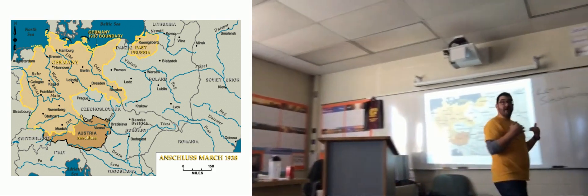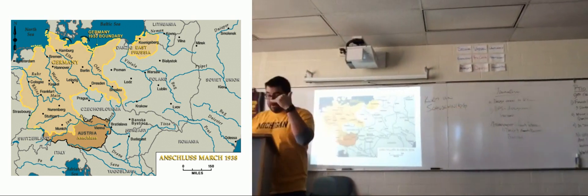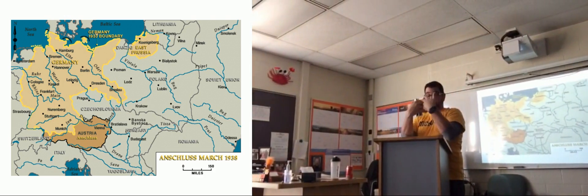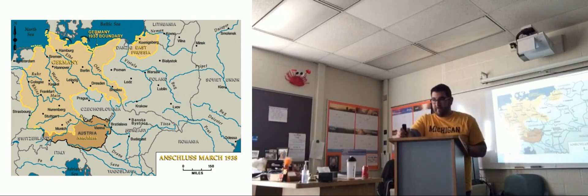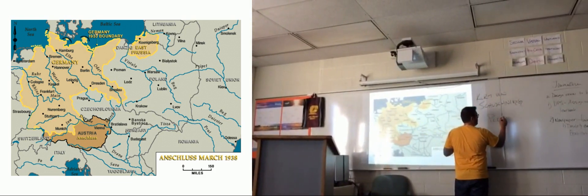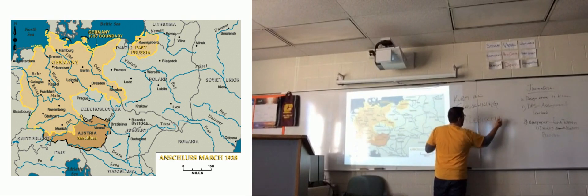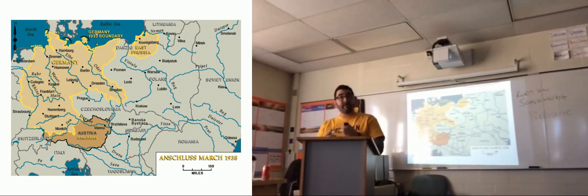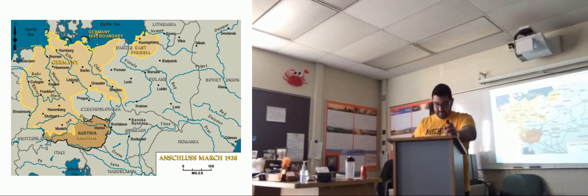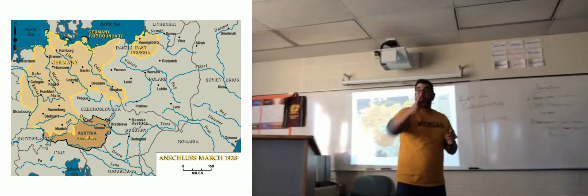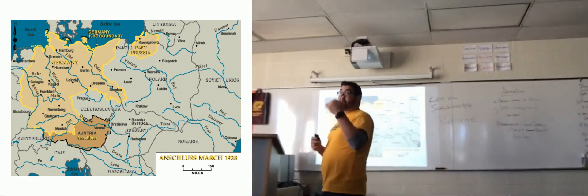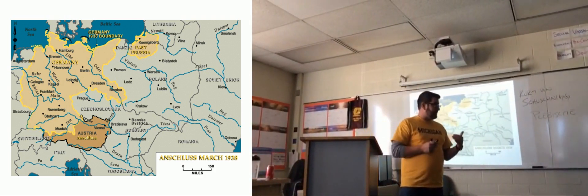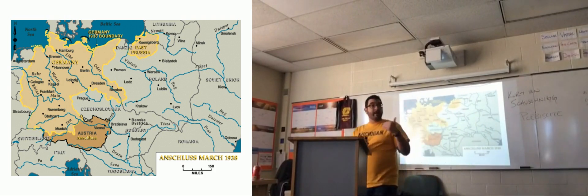Schuschnigg goes back to Austria furious with how this meeting went and calls for a plebiscite — a vote of the people. A plebiscite is a vote: do the people of Austria want to maintain their independence? If the public supported him and said they definitely want to be independent, then Schuschnigg might have justification to not go along with Hitler's demands. If the people are behind him, he could stand up to Adolf Hitler.